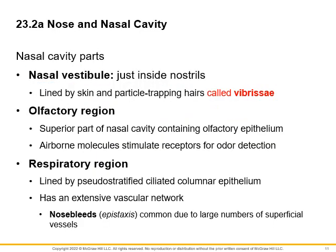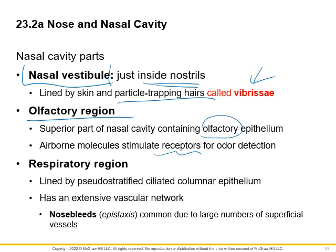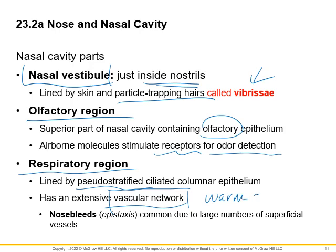Parts of the nasal cavity: the nasal vestibule is just inside the nostrils. We also have particle-trapping hairs called vibrissae. We have the olfactory region, which has olfactory nerve receptors for odor detection. And then we have the respiratory region — pseudostratified ciliated columnar epithelium with an extensive vascular network. We warm the air as it enters the nasal cavity. Nosebleeds are common because of this extensive vascularity.